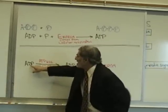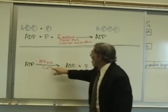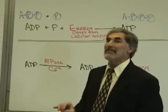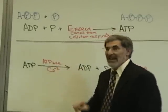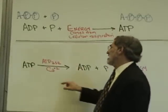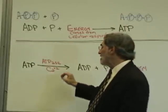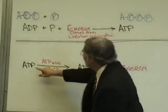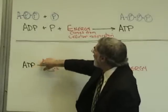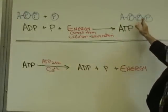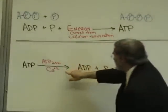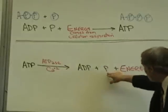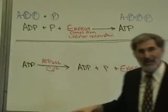In order for ATP to release its energy, it requires — like all chemical reactions — an enzyme called ATPase. The 'ase' ending is typical of enzymes, and it also involves a coenzyme: calcium. Calcium assists this ATPase enzyme in splitting that third phosphate off the ATP.